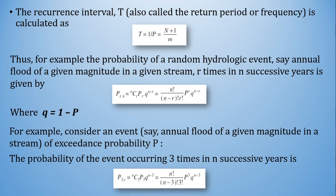For example, consider an annual flood of a given magnitude in a stream with probability P. The probability of the event occurring 3 times in n successive years means r = 3. In n successive years, it is P₃ₙ = nC₃ · P³ · q^(n−3).